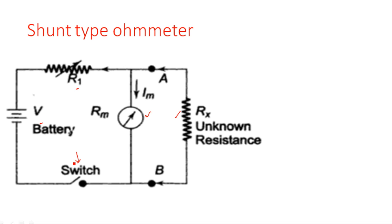In the series type ohmmeter this switch was not there — it is an additional feature here. The purpose of the switch is: when we are not performing any experiment, the battery is saved by disconnecting it from the circuit. If the switch is always closed, the battery produces current and the meter always carries some current. But if you open the circuit, the battery is eliminated from the circuit, so the battery will not drain in non-operating conditions.